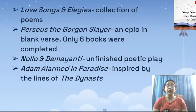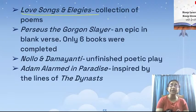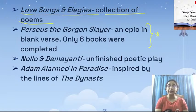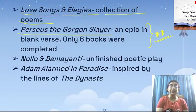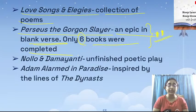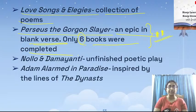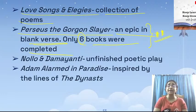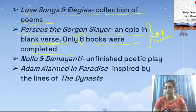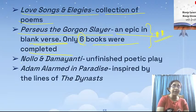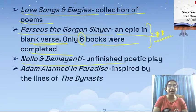Oscar Wilde praised Primavera in a review. He also wrote Love Songs and Elegies, a collection of poems, and his most famous work is Perseus the Gorgon Slayer — a massive epic in blank verse, but it was left unfinished; only six books were completed. Like his brother, he was also greatly inspired by the myths and legends of India, just as Sri Aurobindo wrote Savitri and The Life Divine.